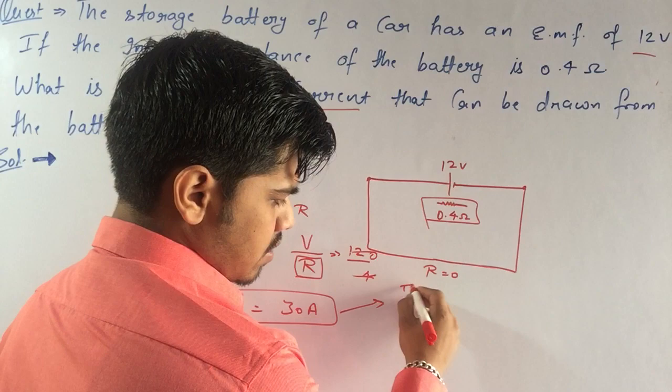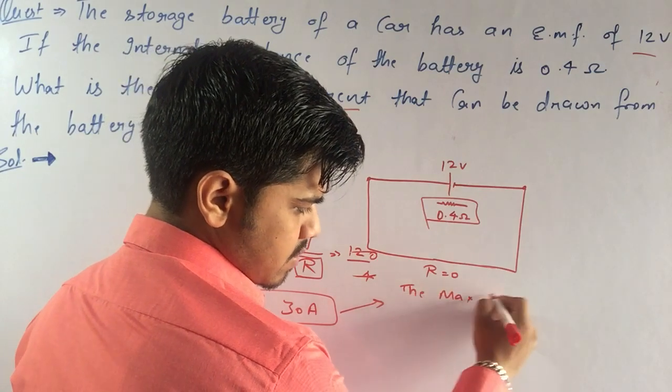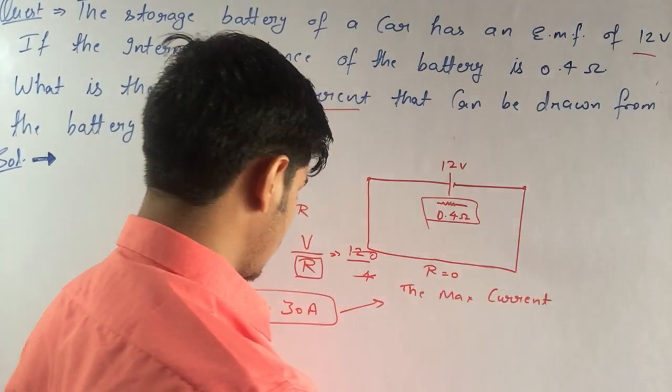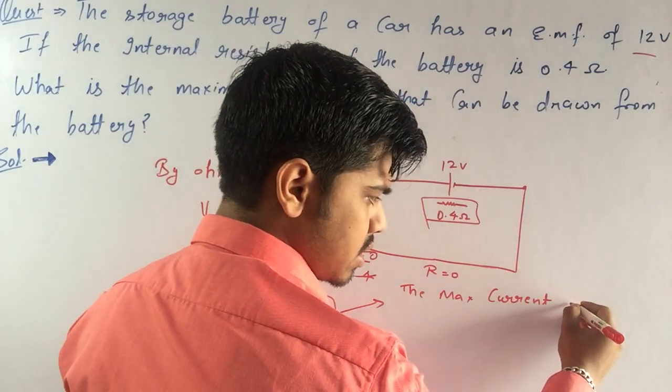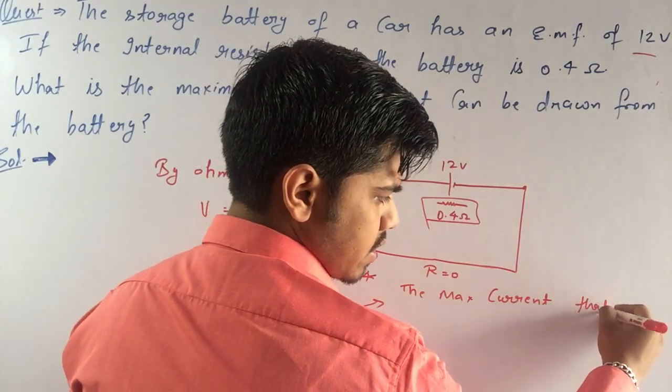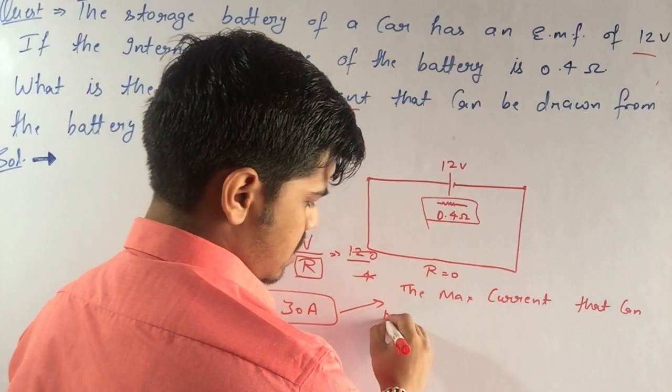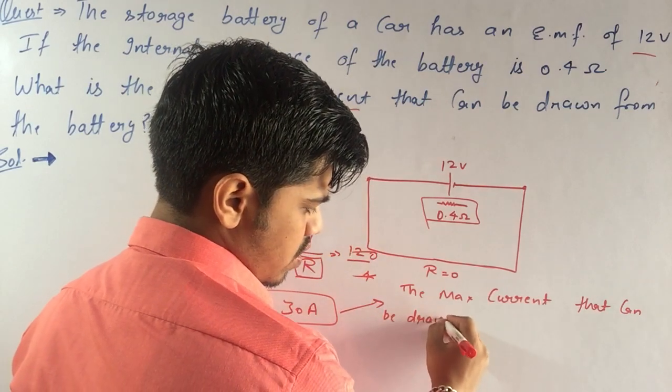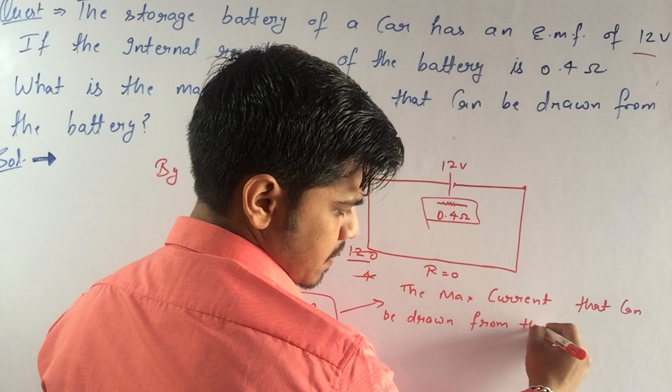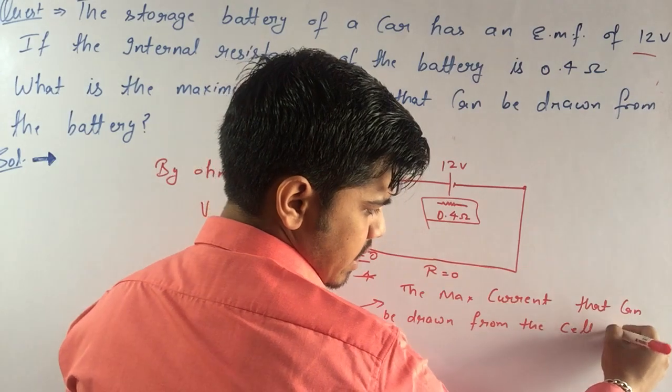The maximum current that can be drawn from the cell is 30 ampere.